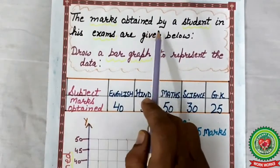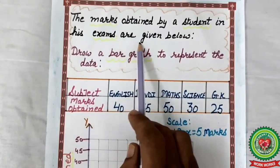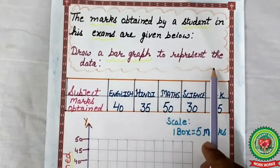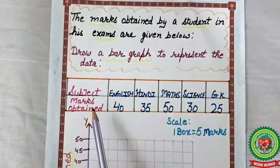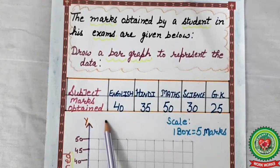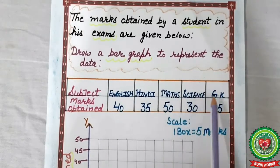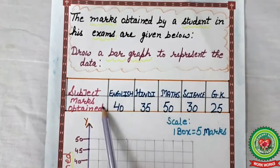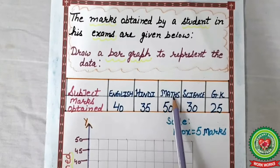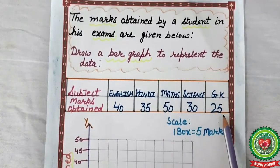The marks obtained by a student in his exams are given below. Draw a bar graph to represent the data. Students, we have been given subjects and marks. Subjects are English, Hindi, Maths, Science, and GK. Marks: in English 40, Hindi 35, Maths 50, Science 30, GK 25.